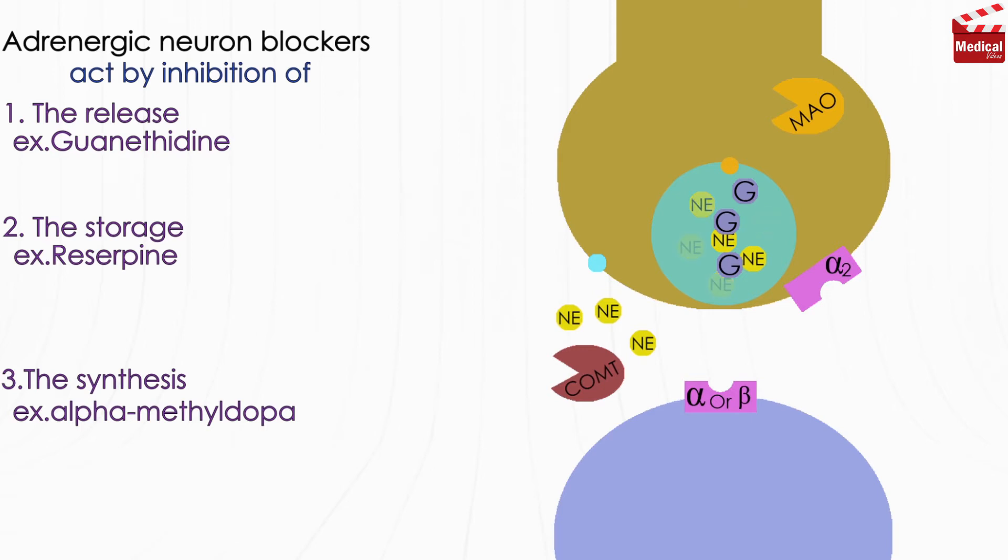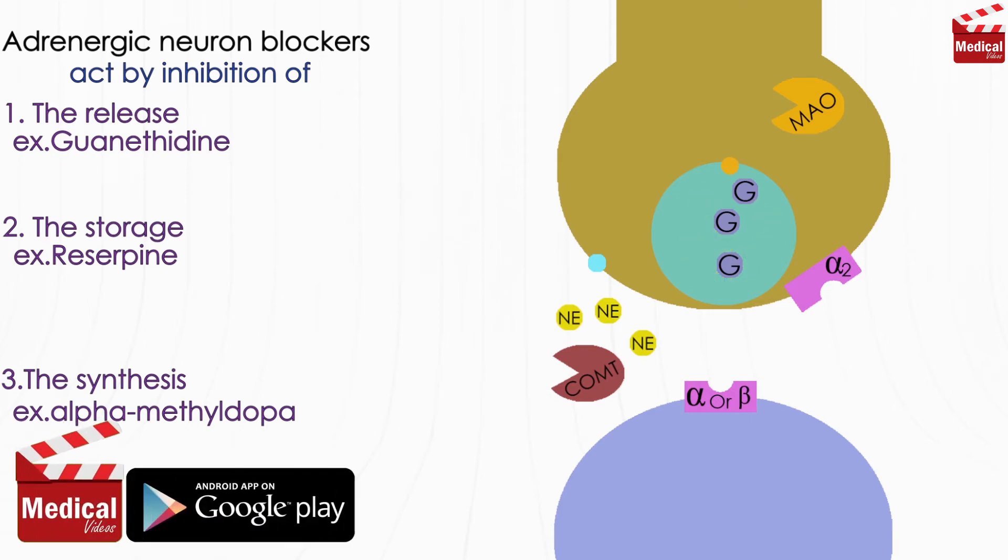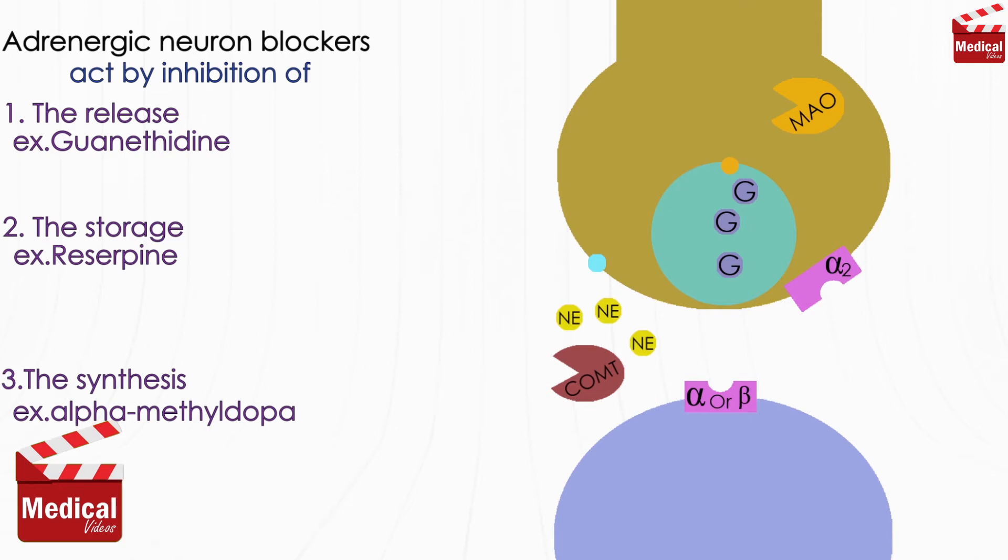This leads to a gradual depletion of norepinephrine stores in the nerve endings. Once inside the terminal it blocks the release of norepinephrine in response to arrival of an action potential. So we can conclude that this agent can be used in the treatment of hypertension.